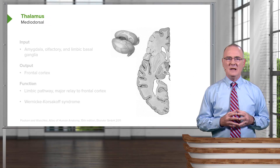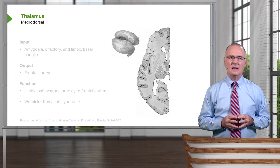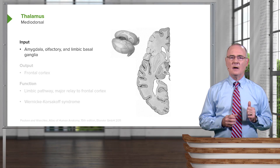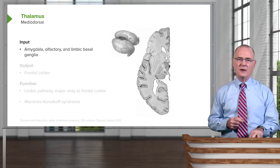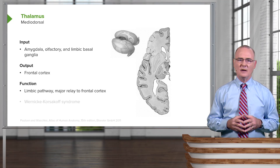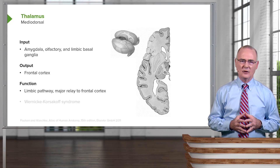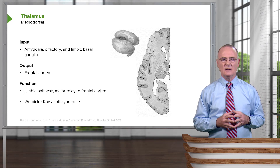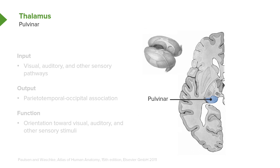Another thalamic nucleus is the mediodorsal nucleus, not shown in the current plane of section. The inputs here are from the amygdala, olfactory inputs, and limbic basal ganglia — multiple inputs — but the output is all to the frontal cortex. One of the functions here is for the limbic pathway to allow a major relay to the frontal cortex. This area can be lesioned and result in Wernicke-Korsakoff syndrome.